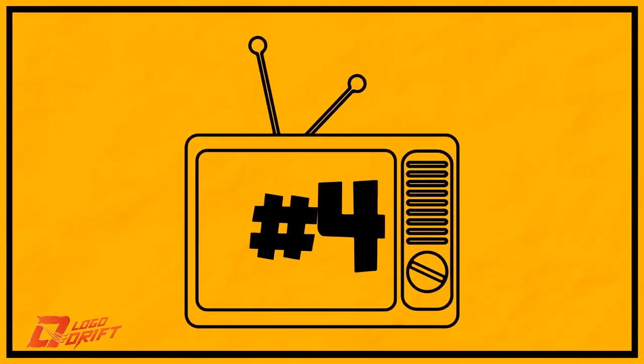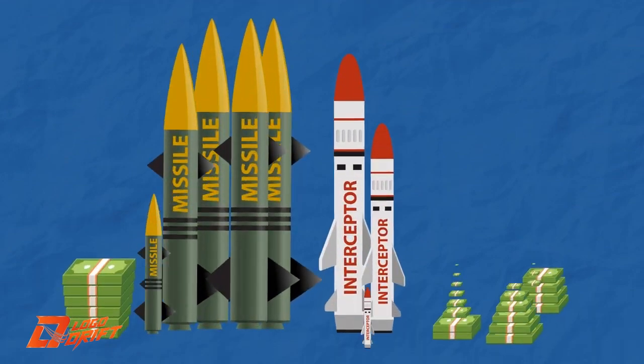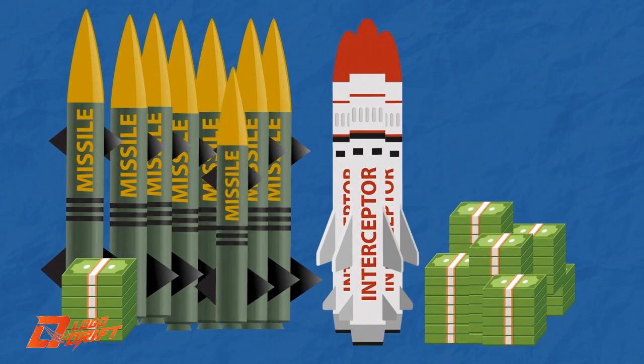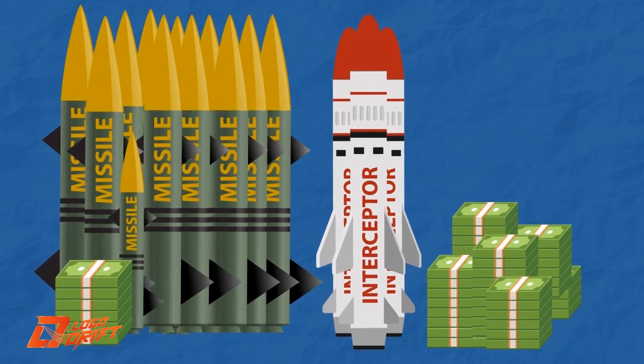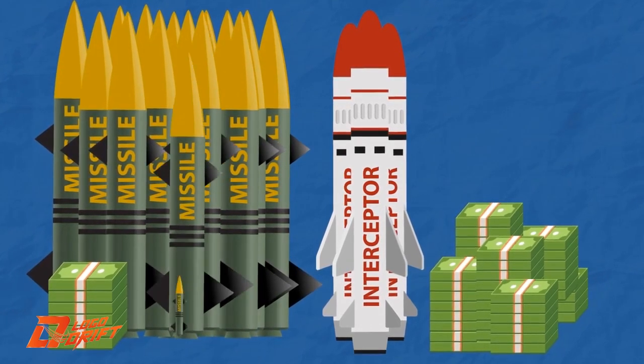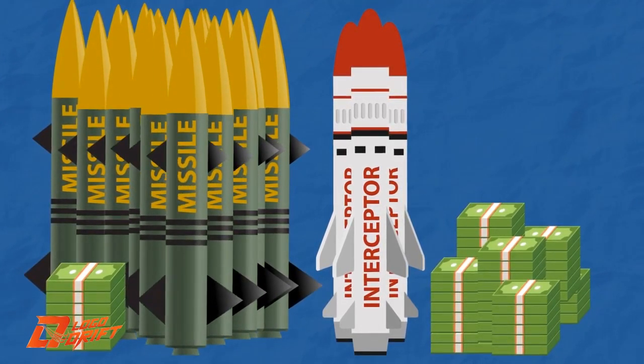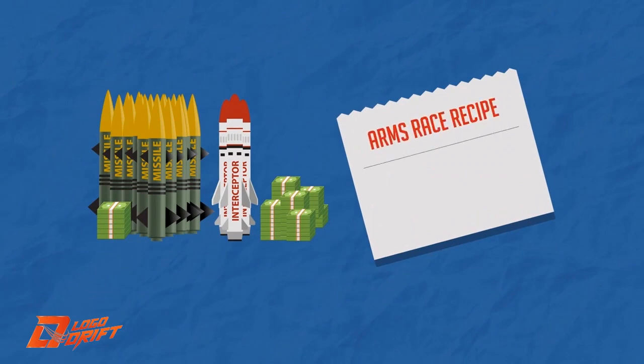Four, missiles are vastly cheaper and easier to build than interceptors. To overwhelm even a fully functional GMD system, our adversaries could just build more missiles. That's a recipe for a new arms race, with the offense always having an advantage over the defense.